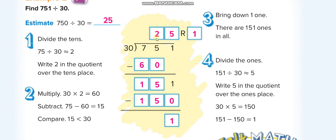30 times 1 is 30, 30 times 2 is 60, 30 times 3 is 90 — 90 is more than 75, so we can't take that. We take 30 times 2, which is 60. 75 minus 60 is 15, then we bring the 1 down. Now we think: 30 times what equals 151 or less? 30 times 3 is 90, 30 times 4 is 120, 30 times 5 is 150, which is close to our required number.